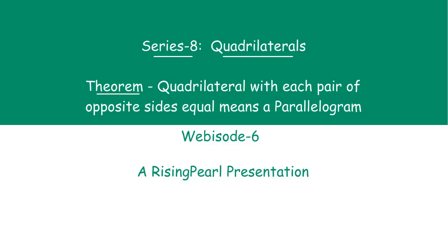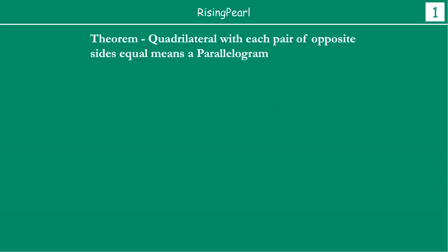We are going to learn more about the theorem. We will understand what the theorem is saying, and then we are going to find out how to prove that the theorem is indeed correct. The theorem is telling us that if you take any quadrilateral where each pair of opposite sides — not one pair, but each pair of opposite sides — are equal, this means that quadrilateral is a parallelogram.